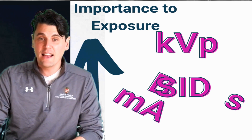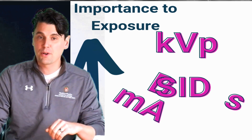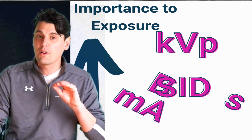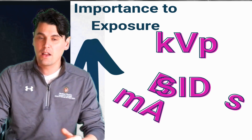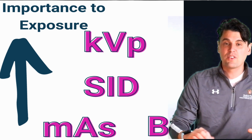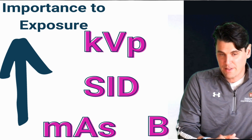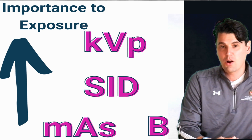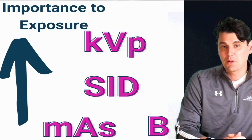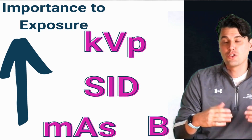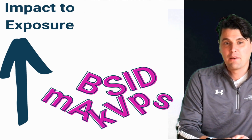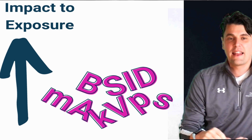SID is actually our number two — SID is very important because of the one over R squared relationship. Finally, the remaining three parameters — MA, Time, and Bucky factor — all have equal importance, as they are all linearly related to the x-ray exposure.